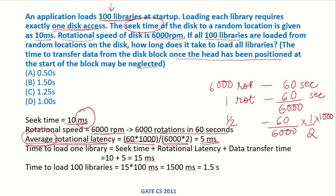The time to load one library is seek time plus rotational latency plus data transfer time. Since data transfer time is neglected, the time per library is 10 + 5 = 15 milliseconds. Therefore, the time to load 100 libraries is 15 × 100 = 1500 milliseconds, or 1.5 seconds. Option B is the correct answer.